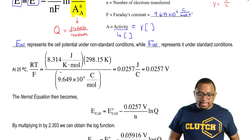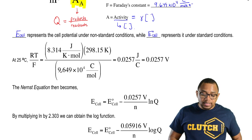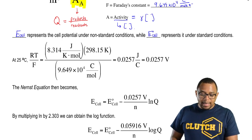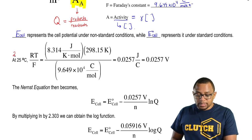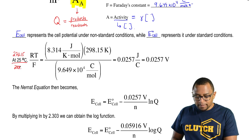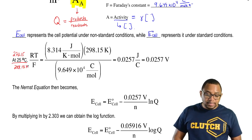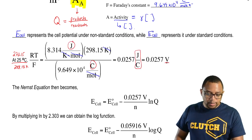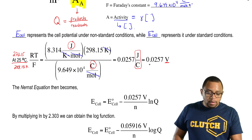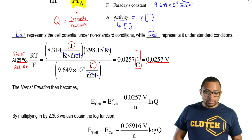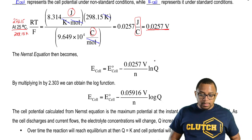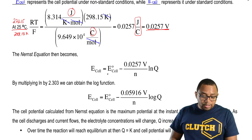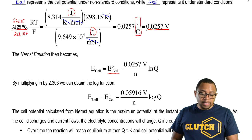If we take the portion RT divided by F at 25 degrees Celsius: R is our gas constant, temperature is 25 degrees Celsius plus 273.15, giving 298.15 Kelvin. F is Faraday's constant. Moles and Kelvins cancel out, leaving joules over coulombs, which equals volts. RT over F reduces to 0.0257 volts. So the Nernst equation becomes: cell potential under non-standard conditions equals cell potential under standard conditions minus 0.0257 volts divided by N times ln(Q).